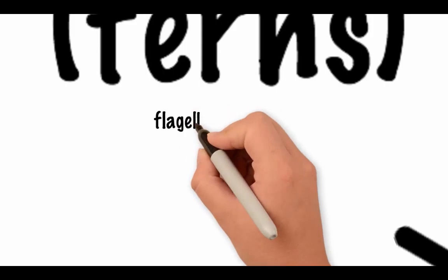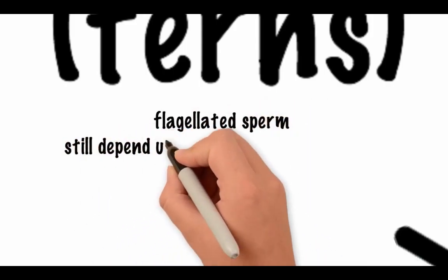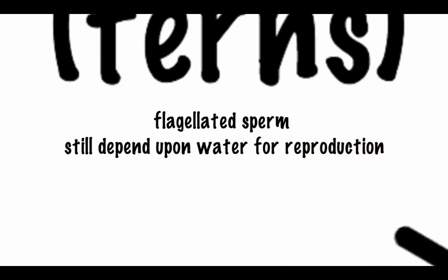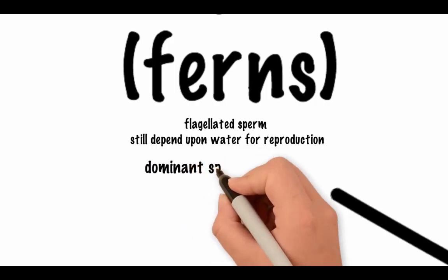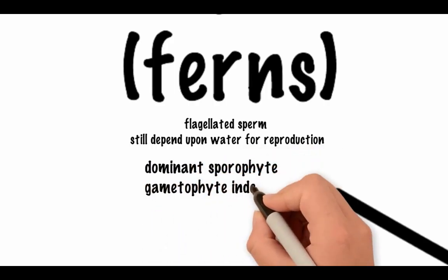Today, one group of seedless vascular plants still exists, the pterophytes or ferns. Although ferns can grow much larger due to the presence of supportive conducting tissues, they are still highly dependent upon water for reproduction. Ferns have a dominant sporophyte and their gametophyte is independent.